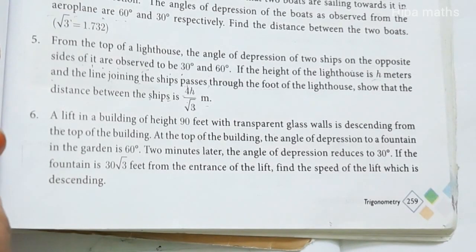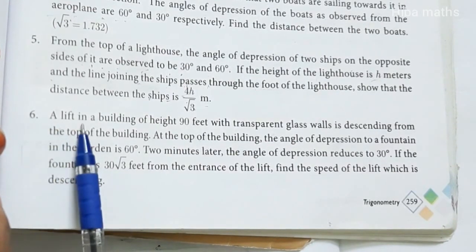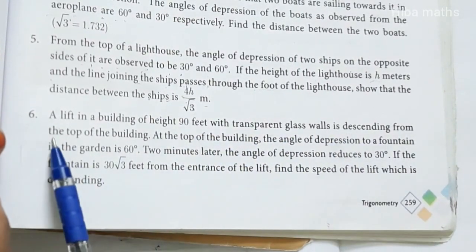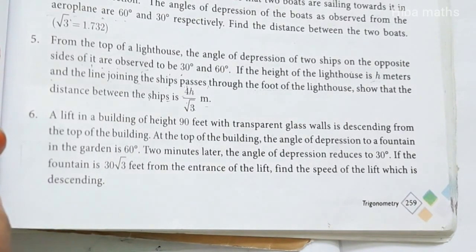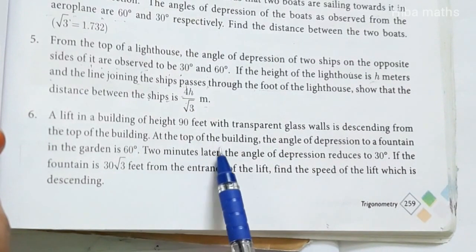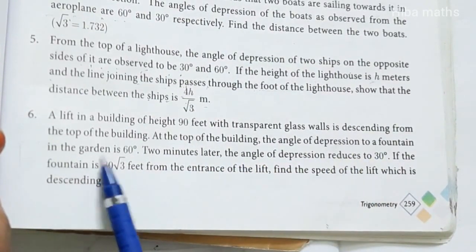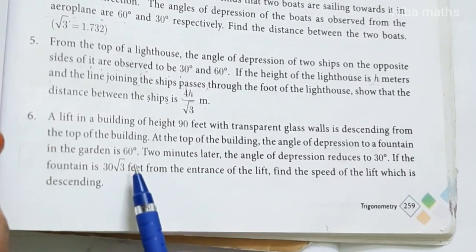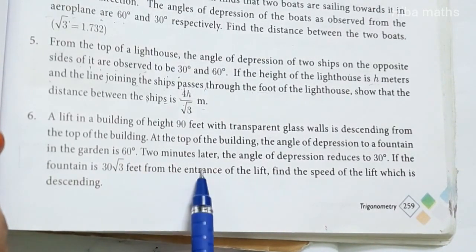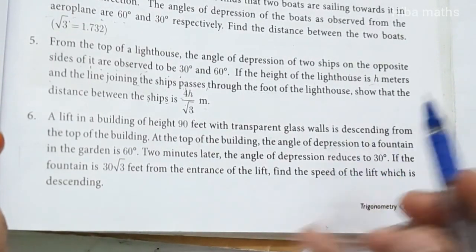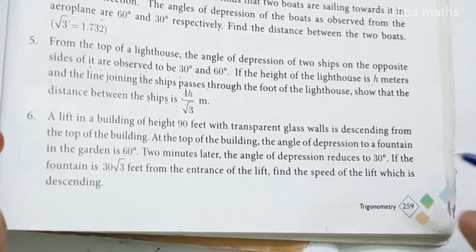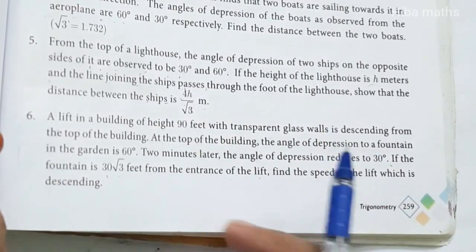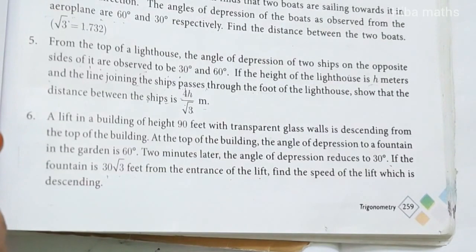Hello students, welcome to Hibamax. Exercise 6.3, question 6. A lift in a building of height 90 feet with transparent glass walls is descending from the top. At the top of the building, the angle of depression to a fountain in the garden is 60 degrees. Two minutes later, the angle of depression reduces to 30 degrees. If the fountain is 30 root 3 feet from the entrance of the lift, find the speed of the descending lift.